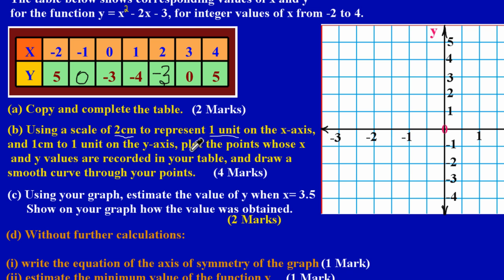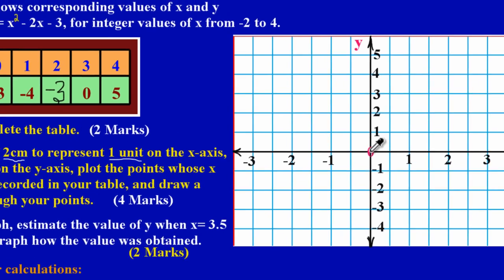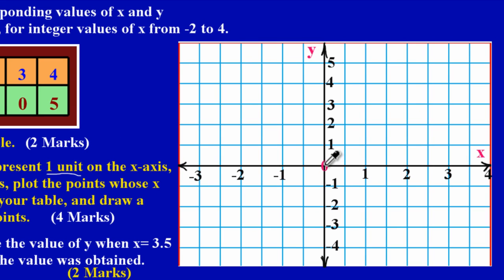They're asking us to plot the points whose x and y values are recorded in our table and draw a smooth curve through the points — that's an easy four marks. I'm going to pair up each corresponding x and y value. When x is negative two, my y value is positive five, so I need to find where those two values intersect on my Cartesian plane — that's the coordinate negative two, five.